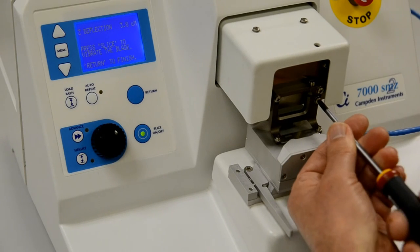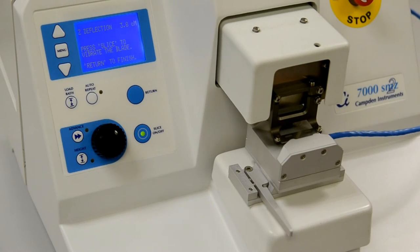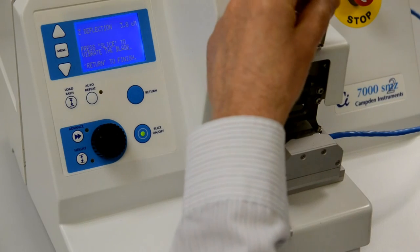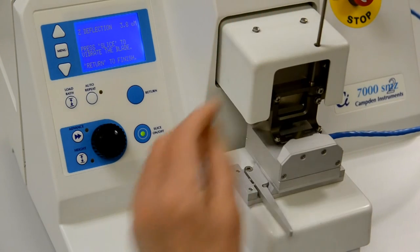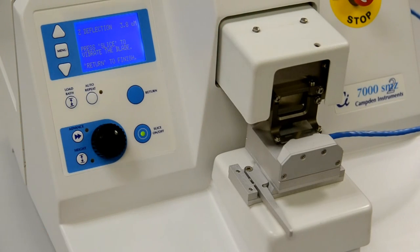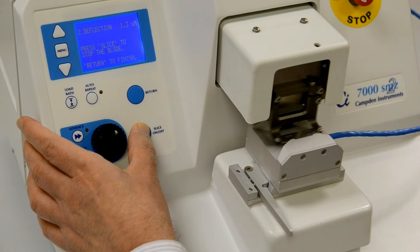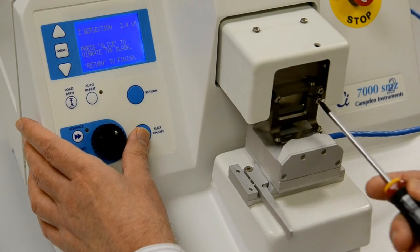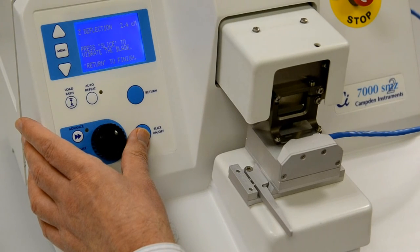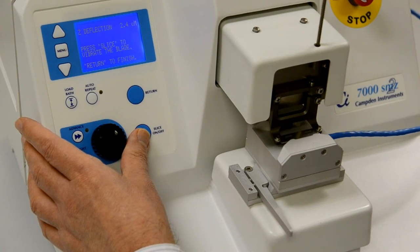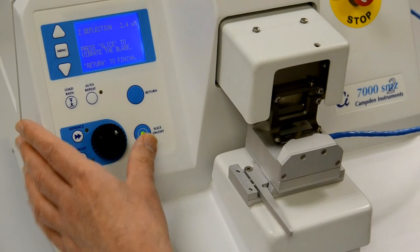On the blade holder, loosen the lower screws slightly and using a hexagonal key, turn the differential screws slightly in one direction. Retighten the lower screw and press the slice on-off key to start vibration. The optical will reassess the blade alignment error.